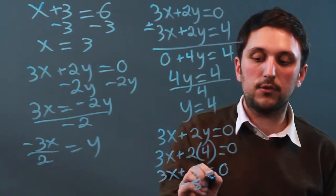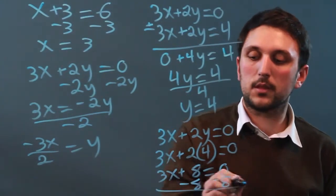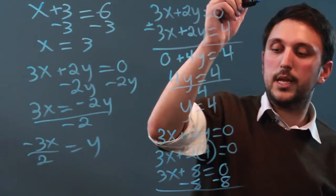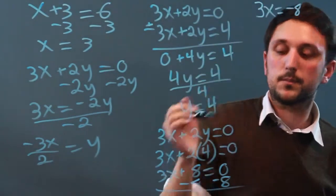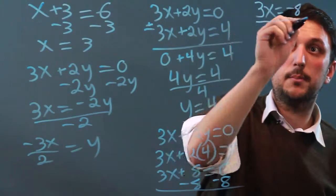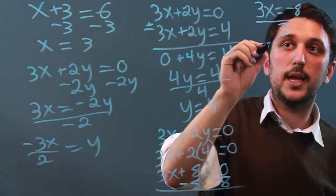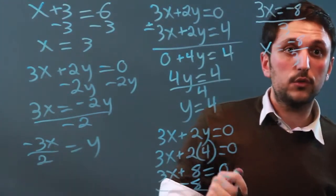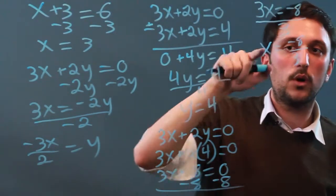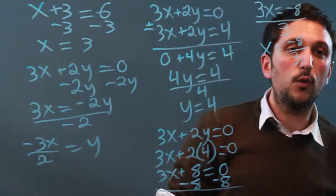Subtract 8 from each side. And we'll continue up here. We get 3x equals negative 8. Divide by 3. And we get x equals negative 8 over 3. So now our solution set is y equals 4 and x equals negative 8 over 3.